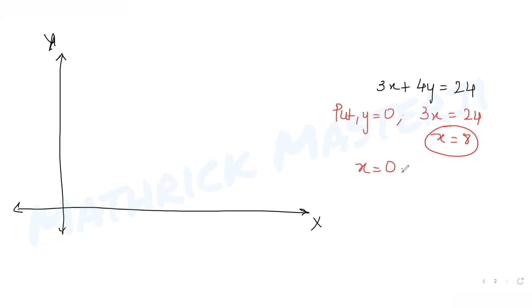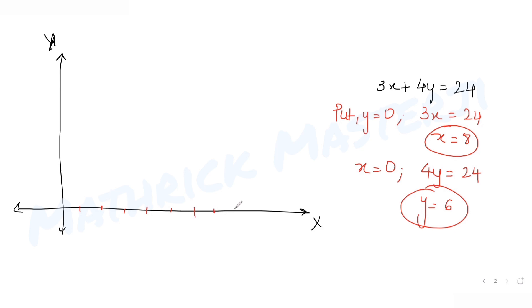If I put x = 0, I get 4y = 24, so y = 6. So the two intercept coordinates are A = (8, 0) on the x-axis and B = (0, 6) on the y-axis.